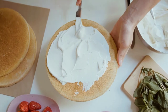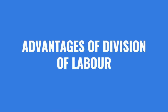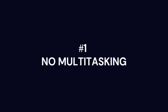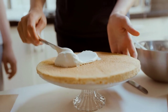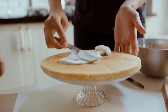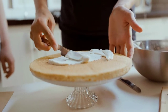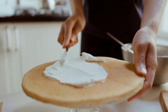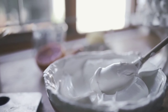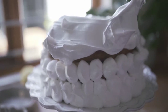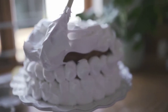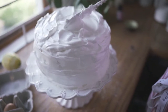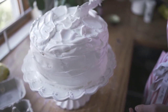Now that we know what division of labour is, let's discuss the three advantages of it. The first advantage of division of labour is less multitasking. Had we divided the number of cakes to be made between each other, we would have to juggle between multiple tasks like making the base, decorating the cake, packaging the cake, and so on. We all know that multitasking leads to a loss of productivity and in some cases a loss of quality. By dividing the steps, each person has a specific number of tasks — less multitasking, more productivity, and better quality.